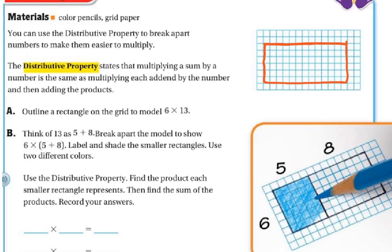So what they want you to do is they want you to think of 13 as 5 and 8. So you're going to break apart the model. So if I do that, I'm going to break apart the model 5 and 8. So I'm actually going to do this with a different color. So 1, 2, 3, 4, 5. I'm going to cut it right here. So this side is going to have 1, 2, 3, 4, 5, 6, 7, 8. I'm still going to leave my 6 on this side, right? I'm going to label and shade the smaller rectangle, and I'm going to use two different colors.